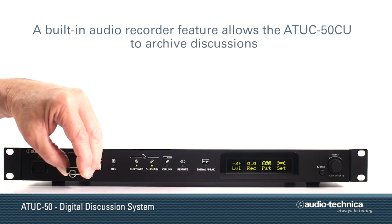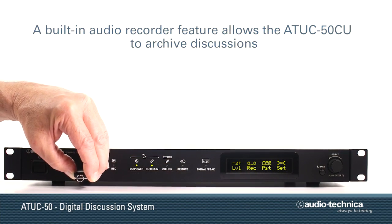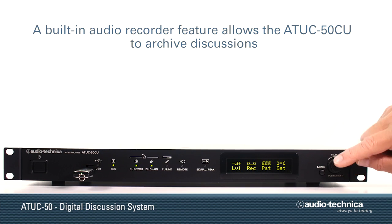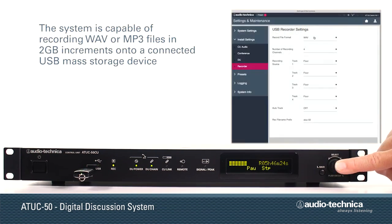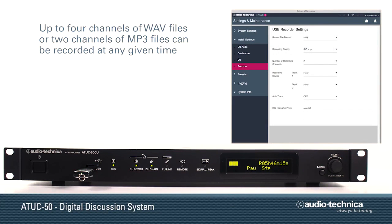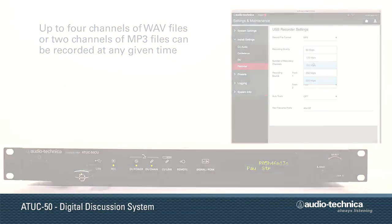To archive discussions, the ATUC50CU is equipped with a built-in audio recorder. Capable of recording WAV or MP3 files in two gigabit increments onto a connected USB mass storage device, the system can record up to four channels of WAV files or two channels of MP3 files.